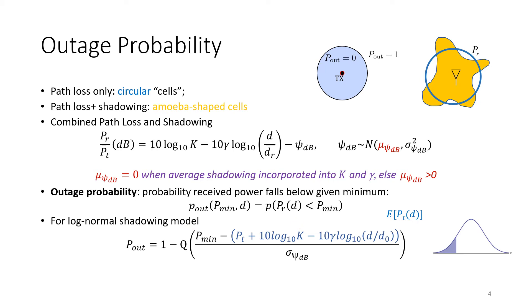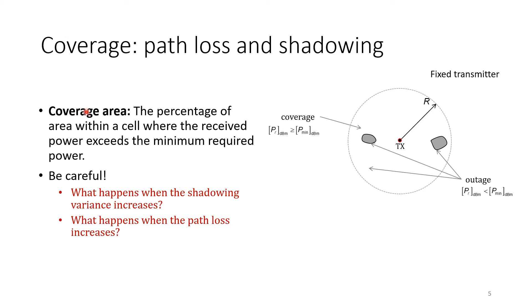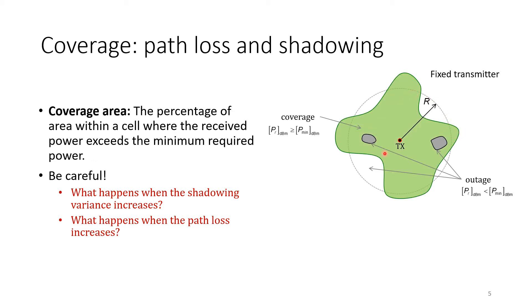Now let's define coverage. The coverage area is the percentage of area within a cell where the received power exceeds the minimum required power. Not everything inside a cell is covered, because shadowing obstacles can block parts of it, creating outage zones inside the cell. Outage is the case where there is no connection because the received power is less than the minimum required threshold.